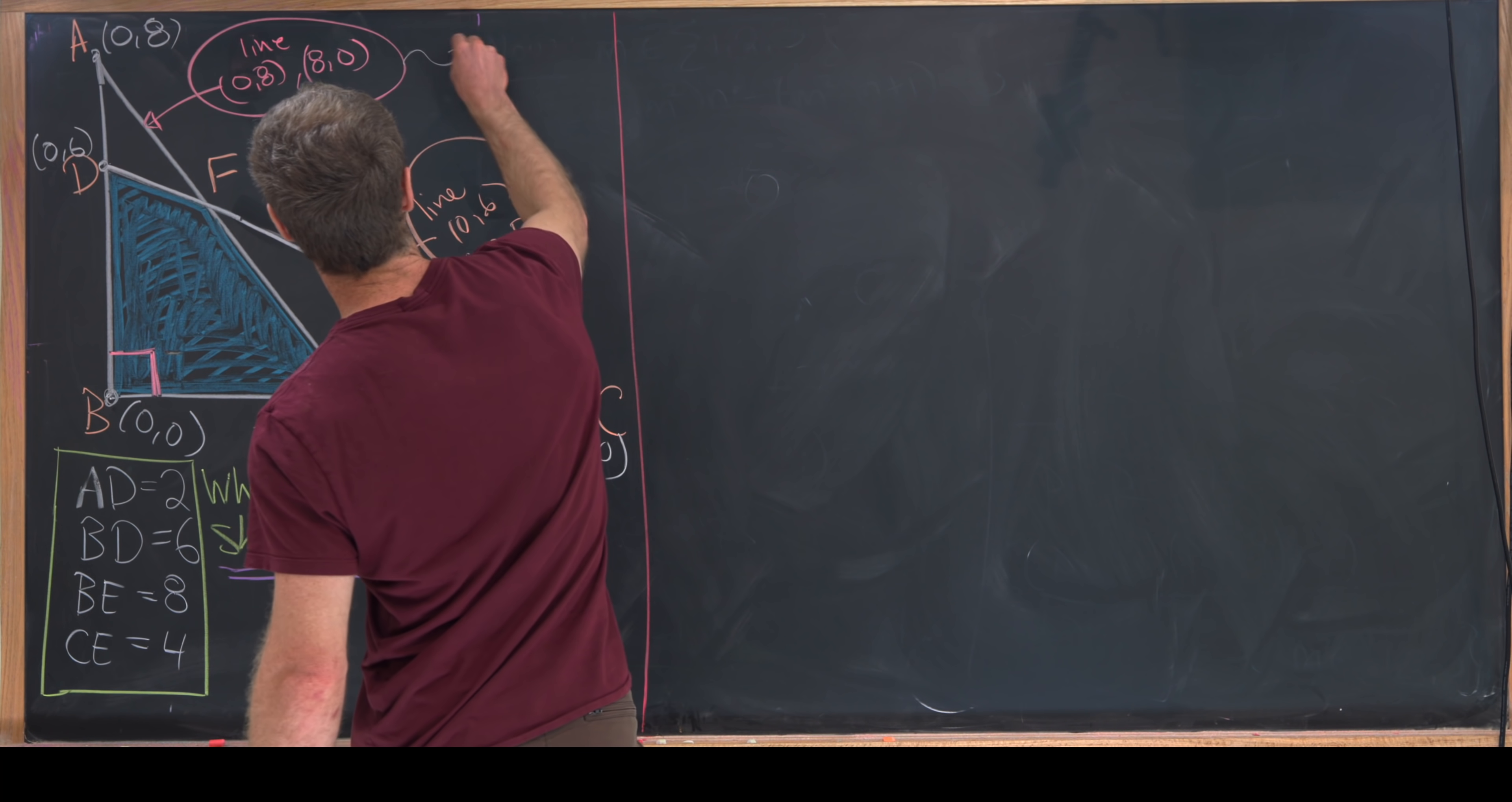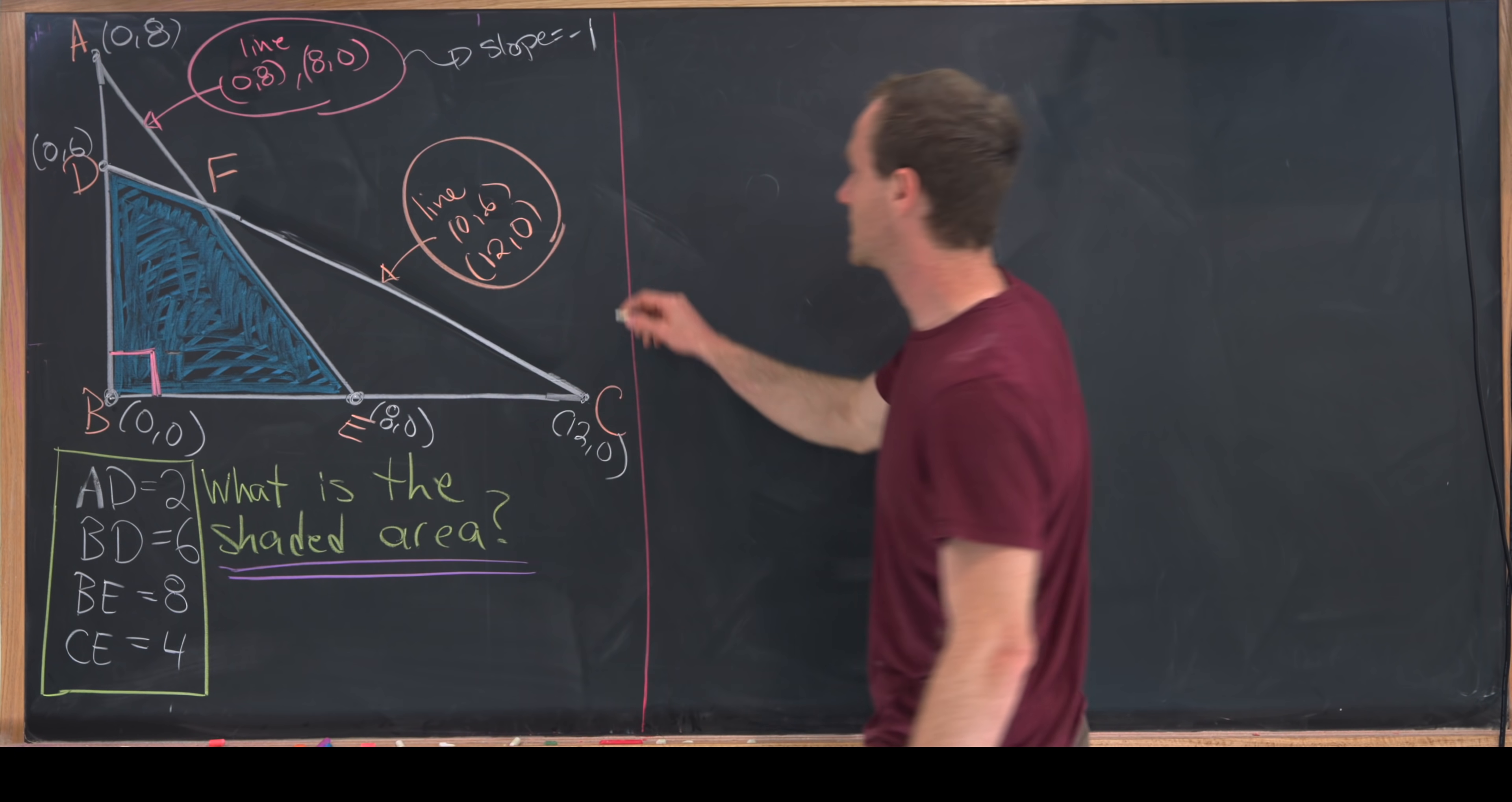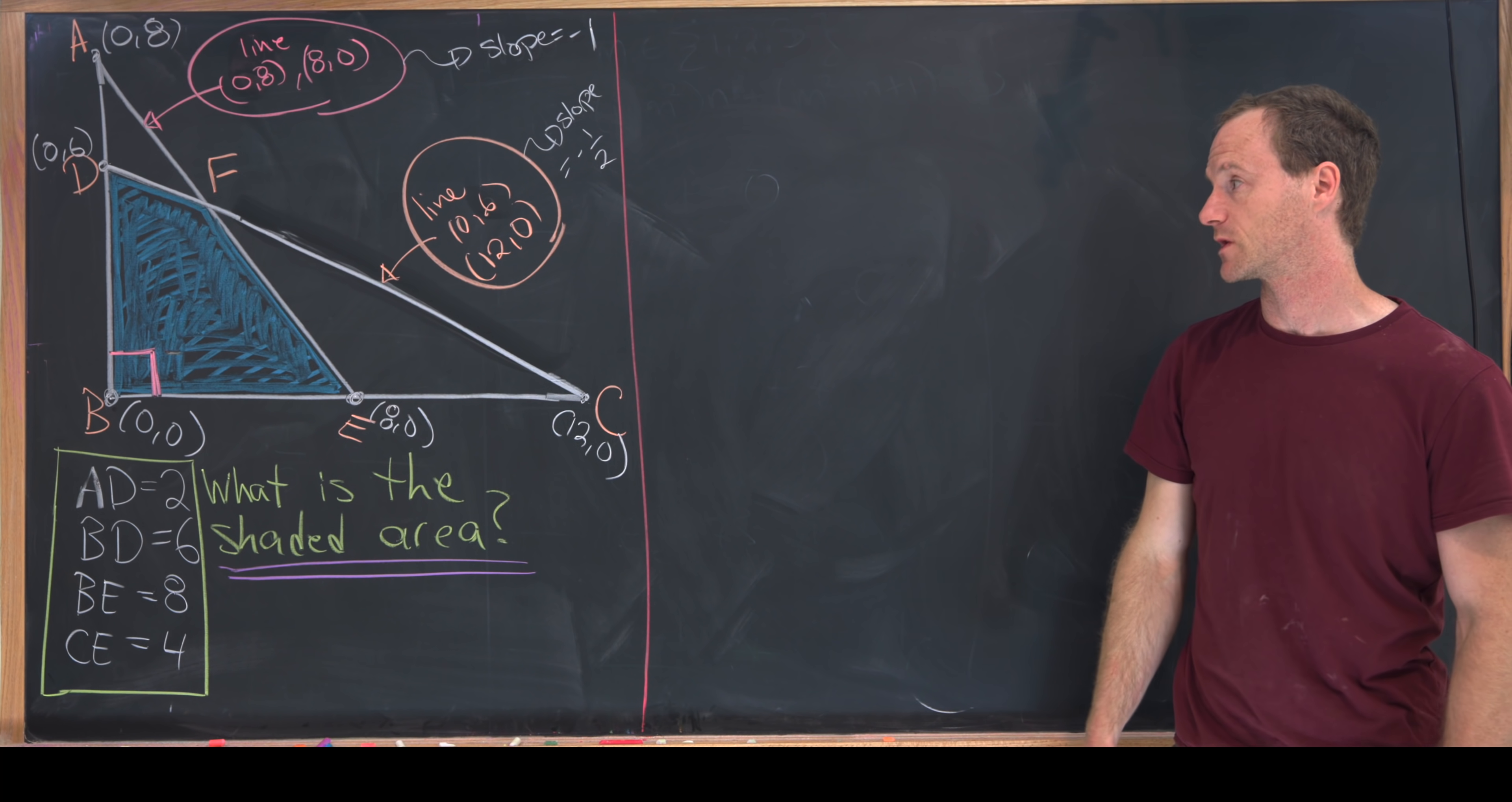Notice here we can easily see that the slope will be equal to -1, whereas here we can see that the slope is equal to -1/2, just using the change of y over change of x formula.